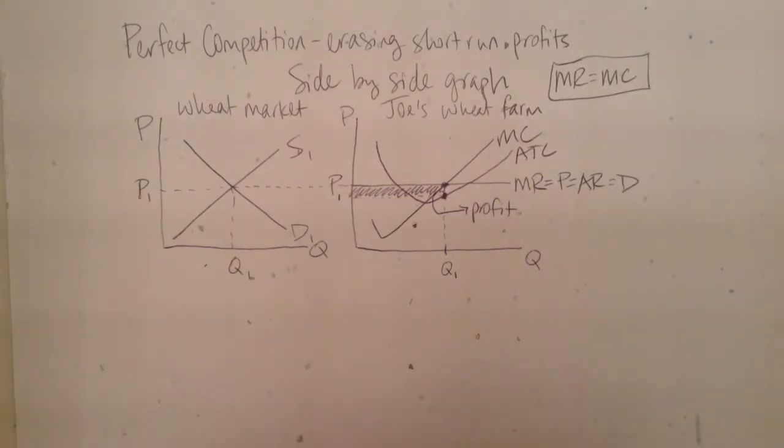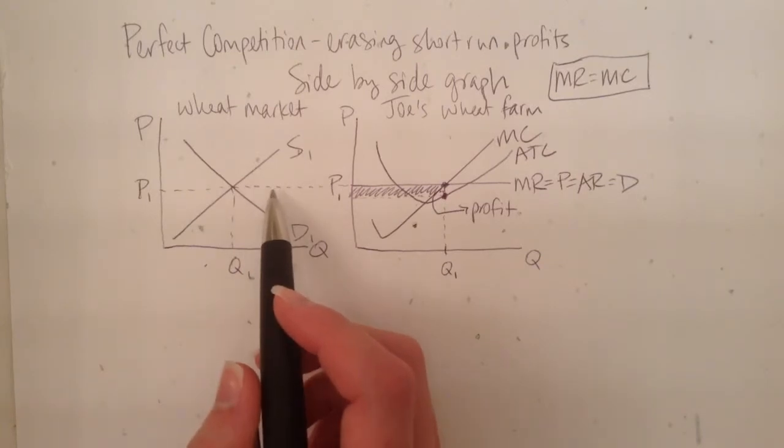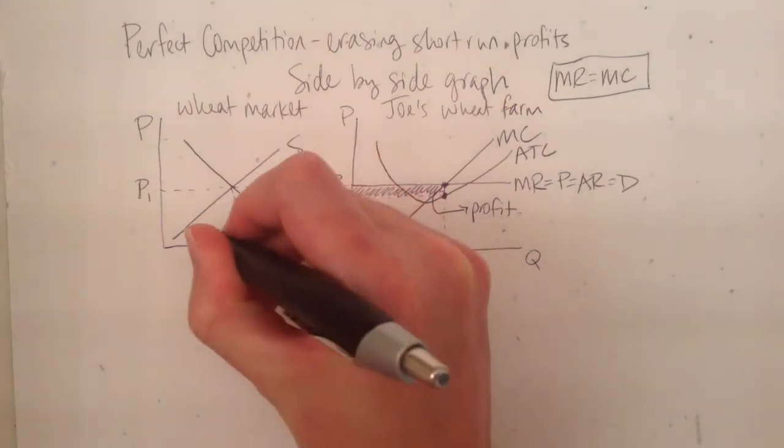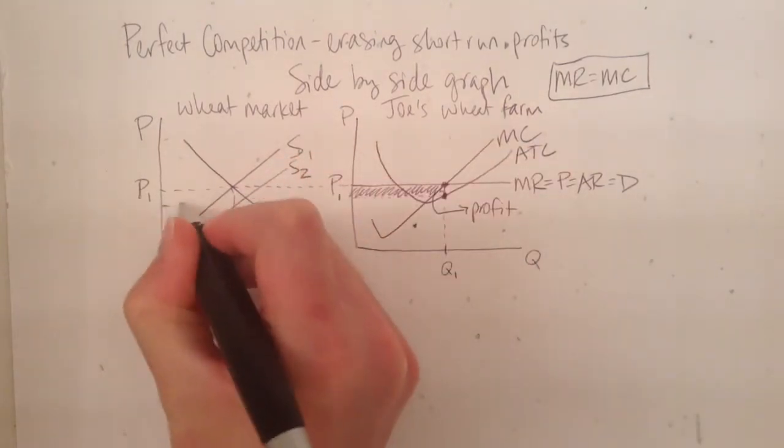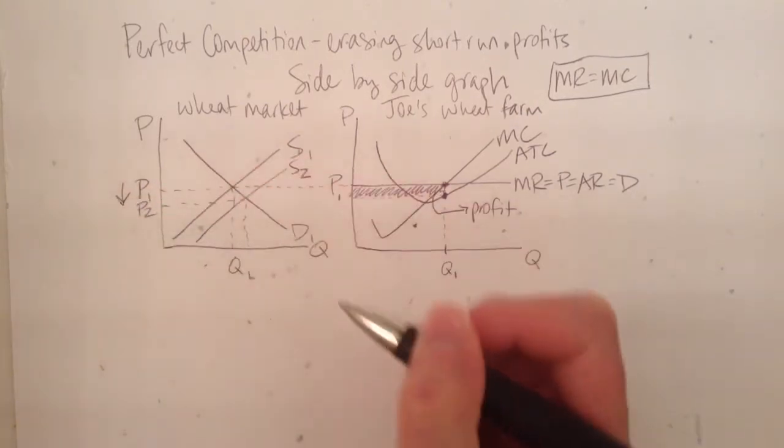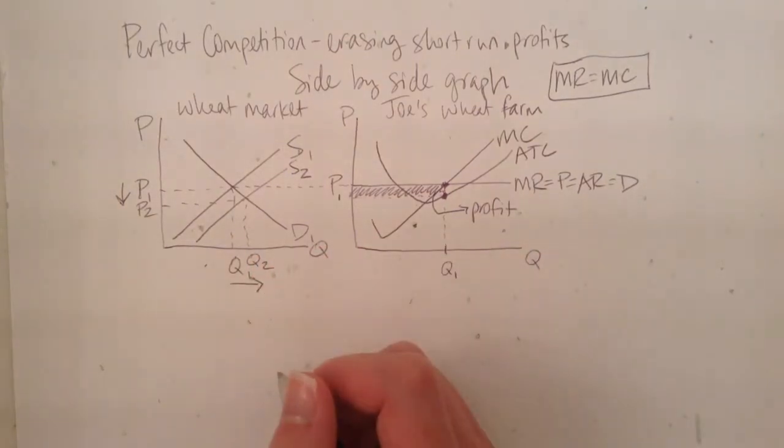So that'll happen. They'll enter the market. And when more firms start entering the market, what do we know happens? Supply in the market increases. Because now we have more firms supplying wheat, so the overall market supply will increase. And when the market supply increases, like so, what happens to the price? It goes down. The market price is going to be driven down. And the overall market quantity will be driven to be higher. So this is going to be good for consumers, because now there's going to be more supply at a lower price.